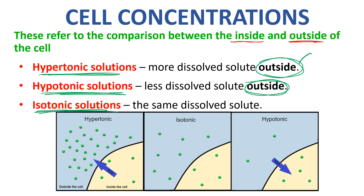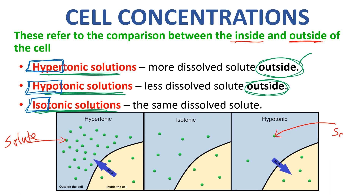Looking at the scientific word meanings: hyper means greater or higher than, so more solute; hypo means lower or smaller, so less solute; and iso means the same. In a hypertonic solution there are much more solute particles outside the cell; in an isotonic solution there's an equal concentration; and in a hypotonic solution there's a much lower concentration of solutes outside.